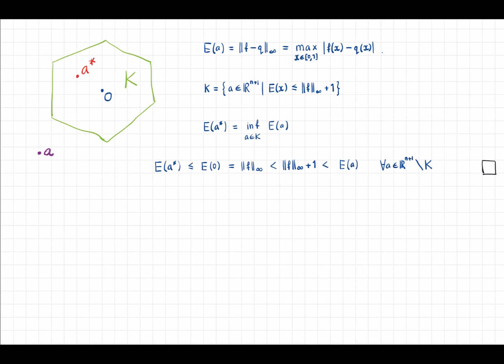Okay, so E evaluated at a star is smaller than E evaluated at zero because zero is inside the set K and a star is a minimizer. Then E(0) is equal to the norm of f. Then of course the norm of f is smaller than the norm of f plus one. But by the definition of set K, since a is outside the set K, E(a) is bigger than the norm of f plus one.